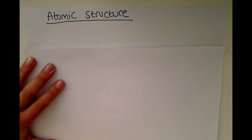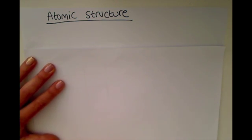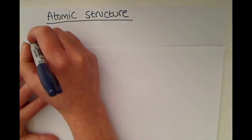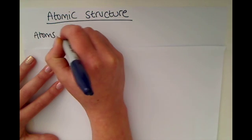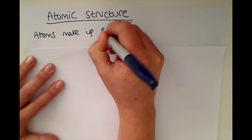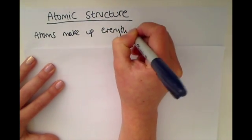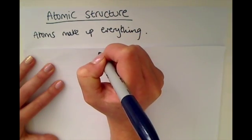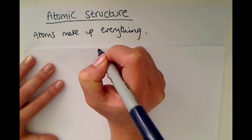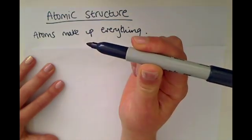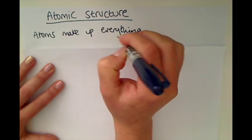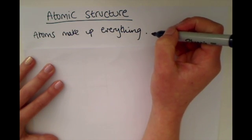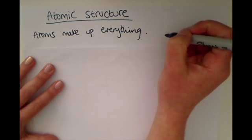If you understand the basic structure of an atom, everything else that you do in chemistry will make a lot more sense. The most important thing to start off with is the fact that atoms make up everything. Every single material and substance on this planet is made of atoms — this pen, my hand, this piece of paper. Everything in this world is made up of atoms, and they are like the building blocks of everything.